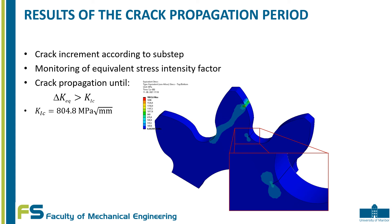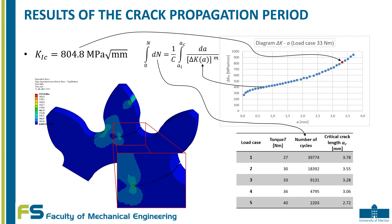Crack propagation was determined until the equivalent stress intensity factor range became larger than the critical stress intensity factor. Based on the values of the equivalent stress intensity factor range for each crack increment, a polynomial trend line was created in Excel. By inserting the critical stress intensity factor into the polynomial equation, the exact critical length of the crack was calculated. This polynomial equation was inserted into the integrated Paris law equation, from which the number of cycles to failure was calculated for each load case.